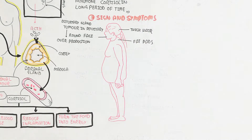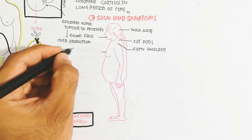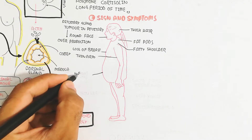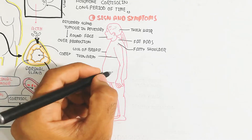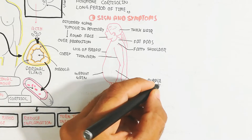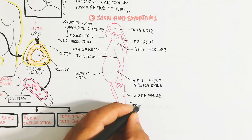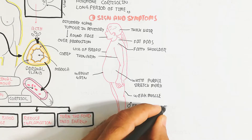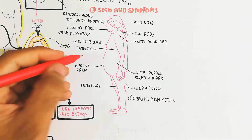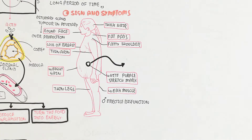The signs and symptoms include thick hair, fat deposits on the back, fatty shoulders, loss of breast tissue, thin arms, weight gain, white or purple stretch marks on the abdomen and legs, weak muscles, and in males: erectile dysfunction and thin legs. These are all signs and symptoms of Cushing's disease.